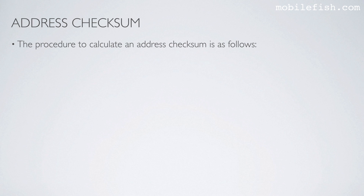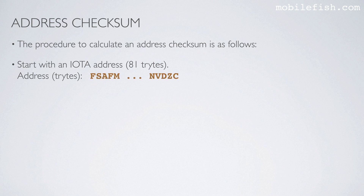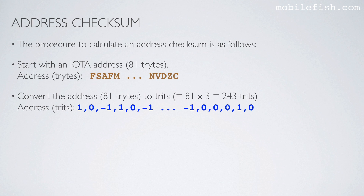The procedure to calculate an address checksum is as follows. Start with an IOTA address which is 81 trites long — here's an example, showing only the first 5 trites and the last 5 trites. Next, convert the address to trites; the address will contain 243 trites. Here's an example showing only the first 6 trites and the last 6 trites.